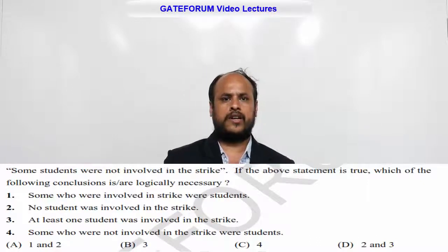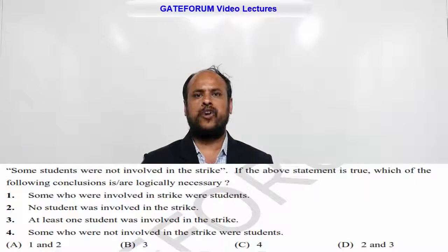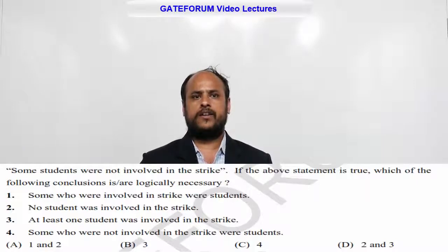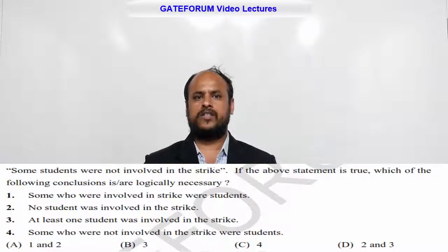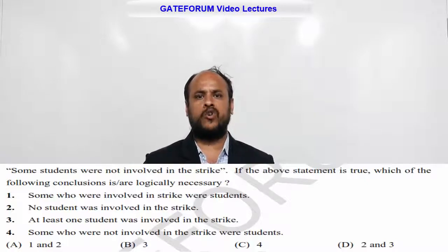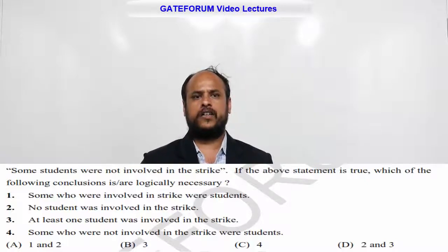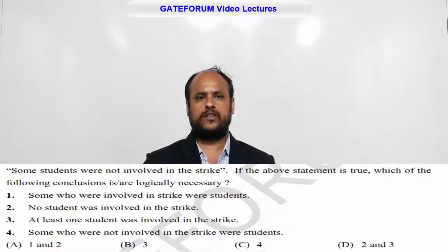Four conclusions are given. First one is: some who were involved in the strike were students. Second one is: no student was involved in the strike. Third one is: at least one student was involved in the strike. Fourth one is: some who were not involved in the strike were students.